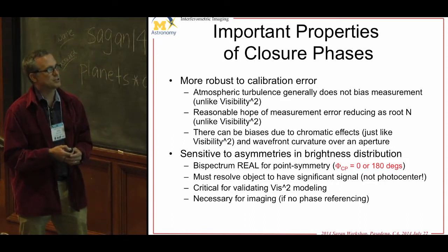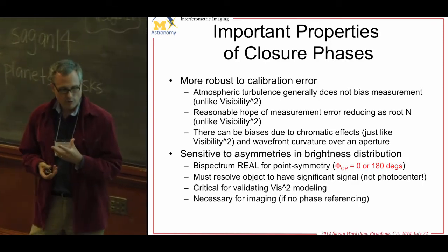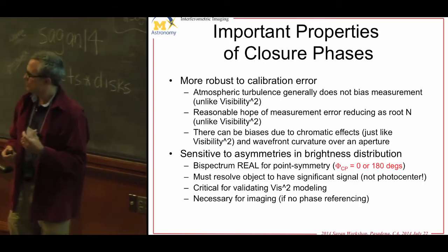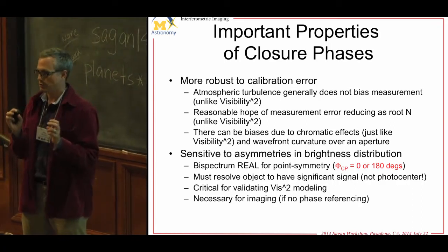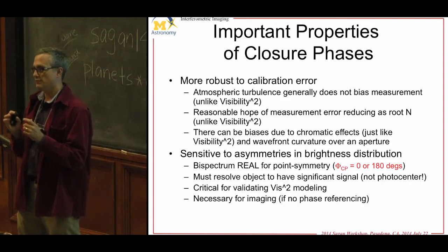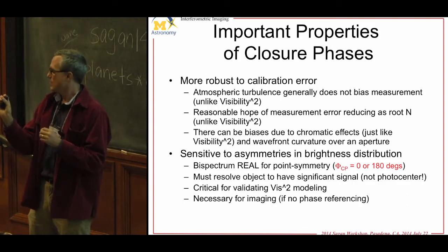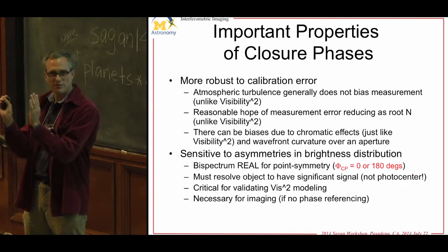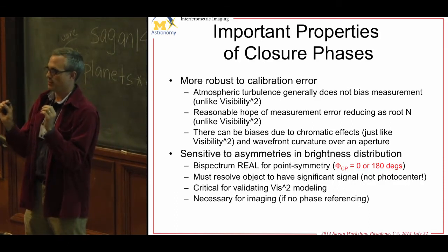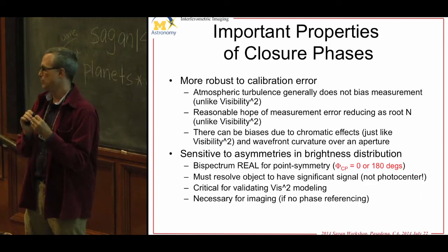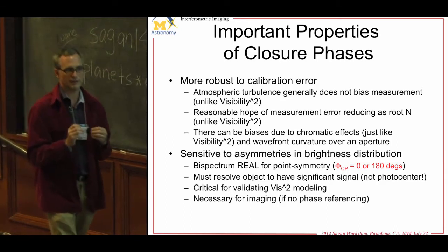Another interesting property of closure phase is that because you're combining three terms, it's not a first-order property — it's a third-order property in your resolution. You have to resolve the asymmetric structure with your baseline. It's not like a photocenter shift where a companion 1,000 times fainter shifts the centroid by one part in 1,000. With closure phase, if you're not resolving the separation, the phase parts partially cancel out in the marginally resolved limit. So you have to resolve it — you need enough resolution.